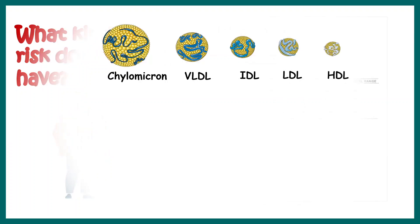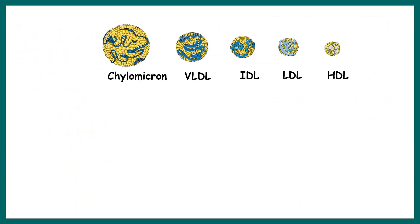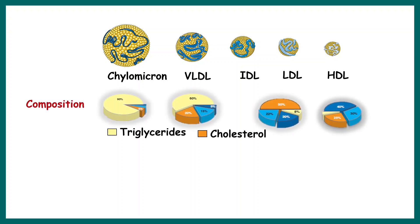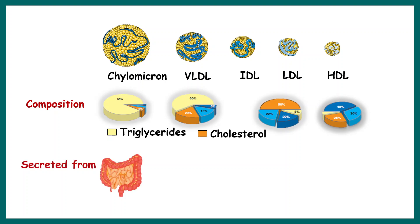In our body we have different lipoprotein particles named as chylomicron, VLDL, IDL, LDL, HDL, etc. All of these are lipoproteins, meaning they have some amount of lipid and some amount of protein — that is how lipid is transported across the body. In terms of composition they differ: chylomicron is highly enriched in triglycerides, VLDL is also highly enriched in triglycerides, LDL is highly concentrated with cholesterol, and in HDL the maximum portion is protein.